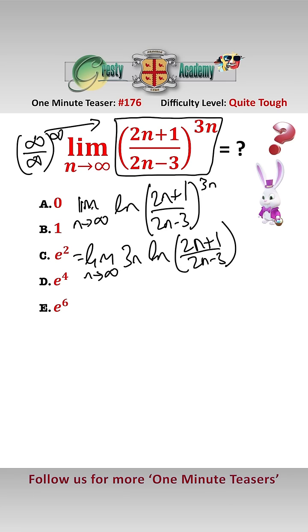Now putting this in L'Hopital form that gives us the limit as n approaches infinity of log of 2n plus 1 minus log of 2n minus 3 over 1 over 3n. And now what we can do is we can differentiate top and bottom using L'Hopital to find this limit.